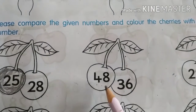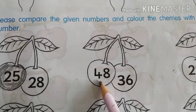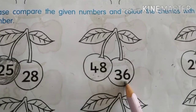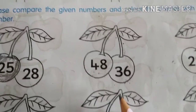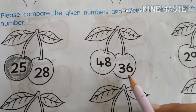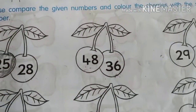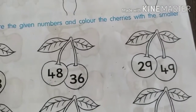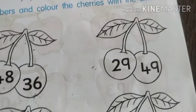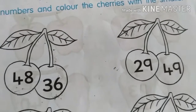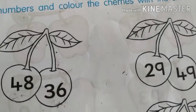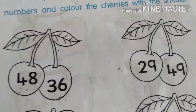Kids, aapko mere saath saath number ko read karna hai. 48 and 36. Which number is smaller? Dono mein se kaun sa number smaller hai? Yes, 36 is smaller. So color the number 36. Now next: 29 and 49. Which number is smaller? Yes, 29 is smaller than 49. So color 29.